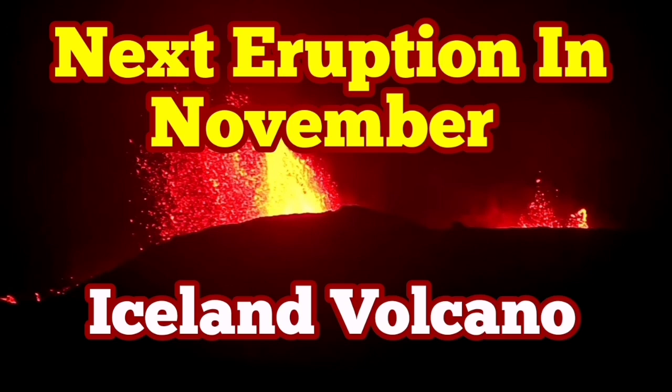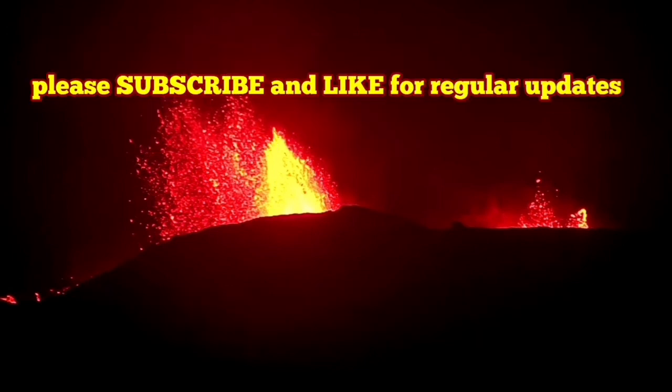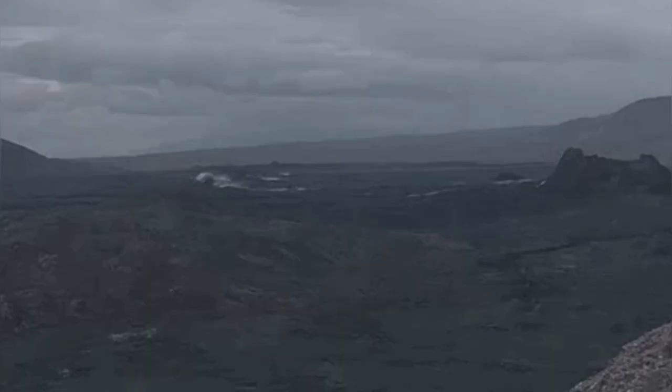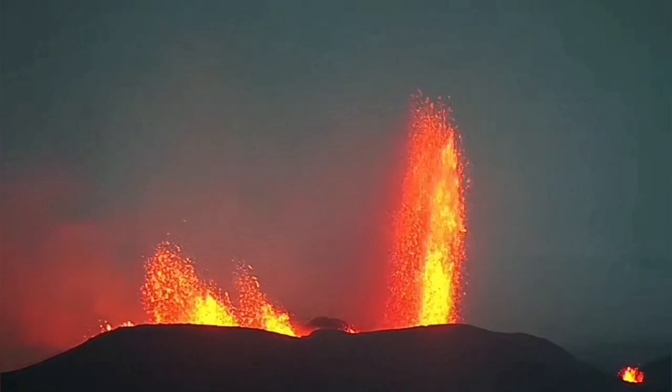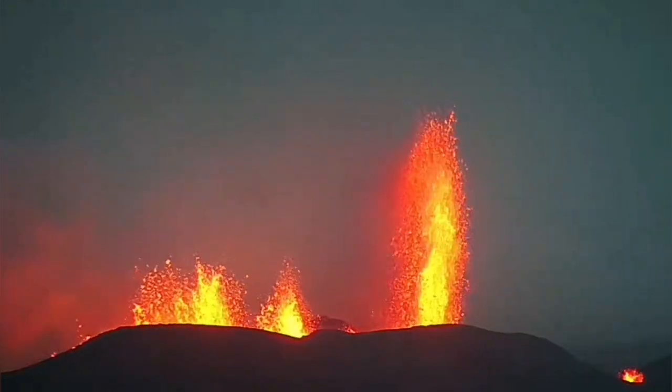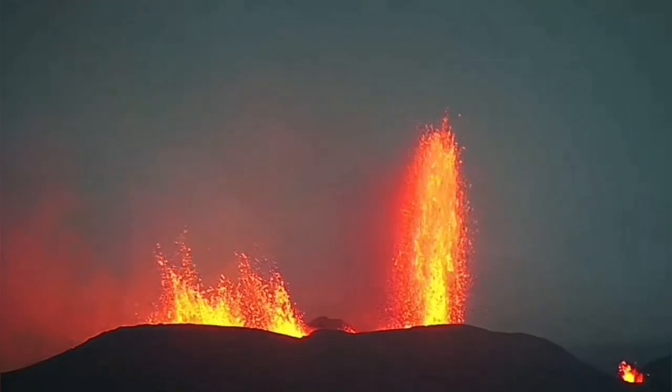The sixth eruption of the Svartsengi volcanic system in the Reykjanes Peninsula of Iceland started vigorously and created huge fountains up to 175 meters tall. In the night you could see them from far distance.